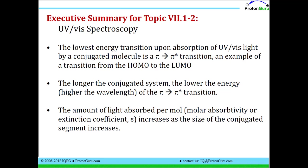To summarize topics 7.1 and 7.2 on UV-Vis spectroscopy: the lowest energy transition upon absorption of UV-Vis light by a pi-conjugated molecule is the pi to pi-star transition — a transition from the highest occupied molecular orbital to the lowest unoccupied molecular orbital. This allows us to study pi-conjugated systems; the longer the pi-conjugated system, the lower the energy or higher wavelength we'll see for that pi to pi-star transition in our spectrum. Finally, the molar absorptivity or extinction coefficient increases as the size of the conjugated segment increases, because a larger part of the molecule is responsible for absorbing light, so more photons are absorbed per mole of material.